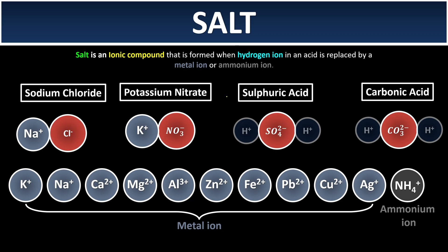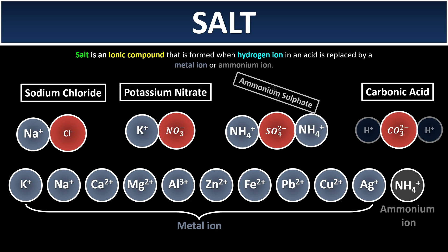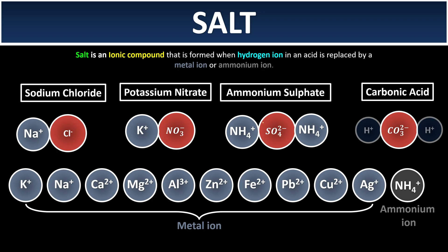What if sulfuric acid has more than one hydrogen ion? We remove both and replace them — this time with ammonium ion. We get ammonium sulfate. But why two ammonium ions? Because sulfate has a negative charge of two and ammonium has only a positive charge of one, so we need two ammonium ions to balance the charges.